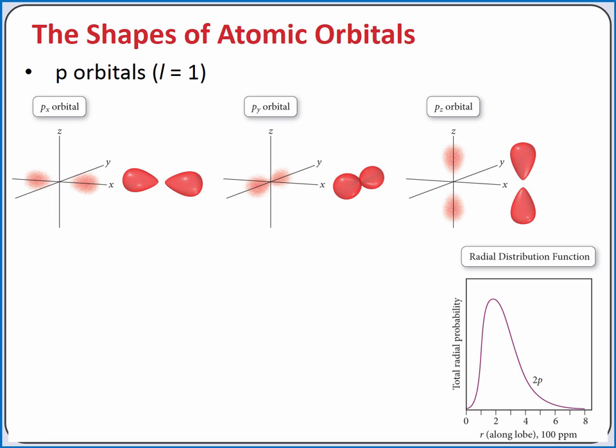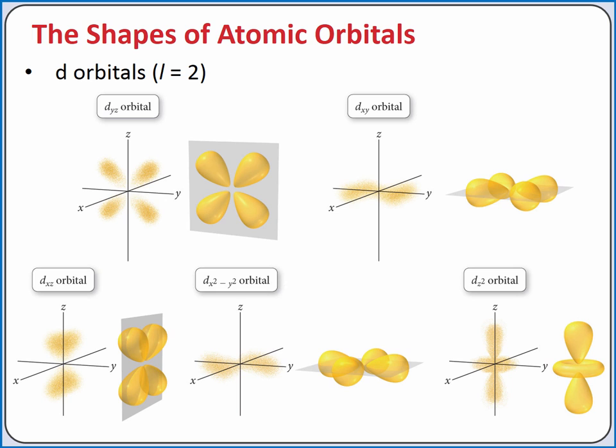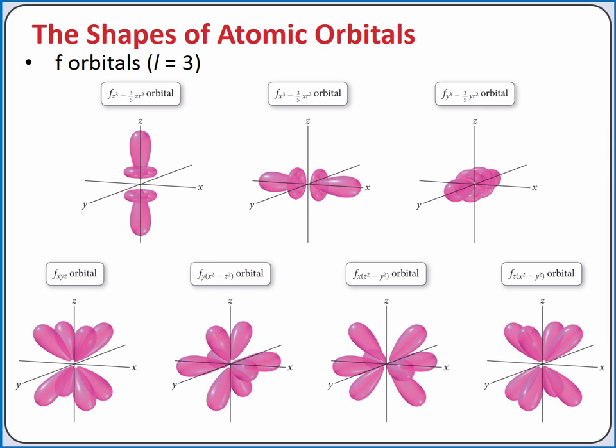Our p orbitals have the shape of dual teardrops, and there are three different orientations of p orbitals centered on the x, y, and z axes. There are five orientations for our d orbitals, and seven orientations for our f orbitals. Although the orbital shapes become more and more complicated, remember that an orbital just represents where the electron is likely to be found, when modeled as a standing wave around the nucleus.